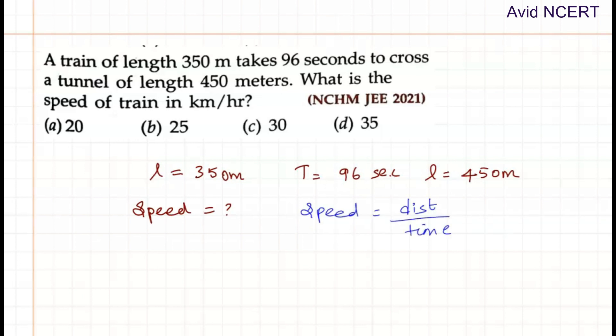To find the speed, the distance we have here is 350 and 450. Add them together: 350 meters plus 450 meters divided by time which is 96 seconds.